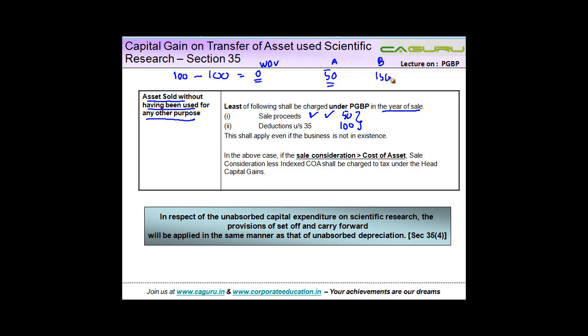In second case let's say the sale proceeds is 150. Then the sale proceeds is 150, the deduction is 100. So 100 has to be charged under PGBP. This shall apply even if the business is not in existence. So even if you have discontinued this business, it doesn't matter, this is chargeable to tax under PGBP.